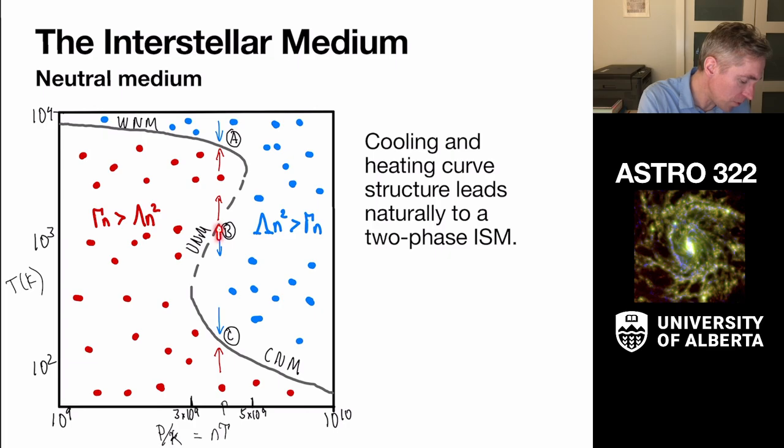this gas off here, and I push it down into this regime where the cooling is larger than the heating, what's going to happen is that this gas is going to keep getting colder. And so it's actually going to fall down all the way and land on this next locus down here where the cold neutral medium is formed.